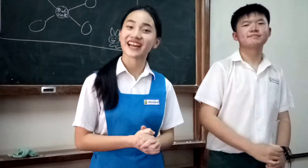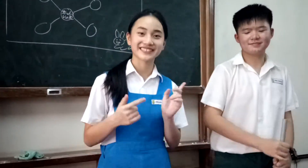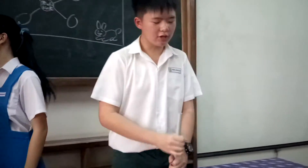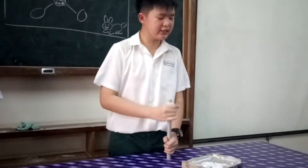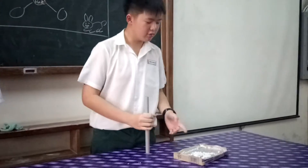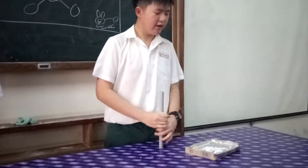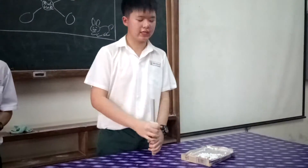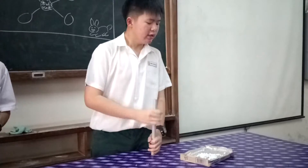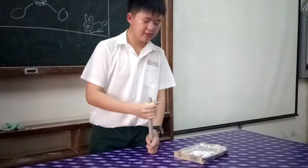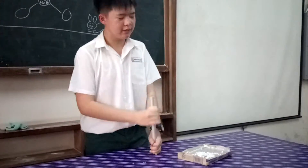Today we are going to show you some science experiments. This is a very simple experiment. What you need to know is that everything except the sponge has neutral charges, including the box, the ball in the box, and the PVC pipe.